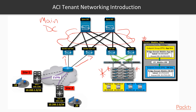Going back to Section 2 and Section 3, we talked about domains. One of the domains we discussed was the Layer 3 Out, or the external routed domain. What it does is allow us to connect our data center — in this case our ACI fabric — to an external network.